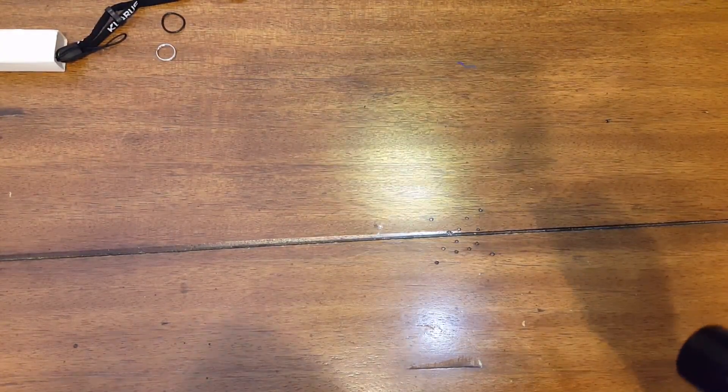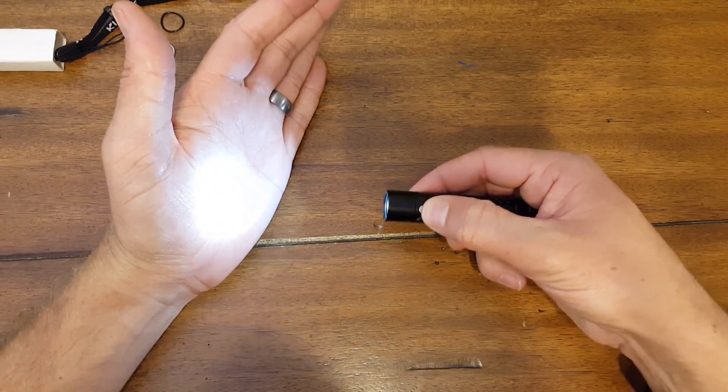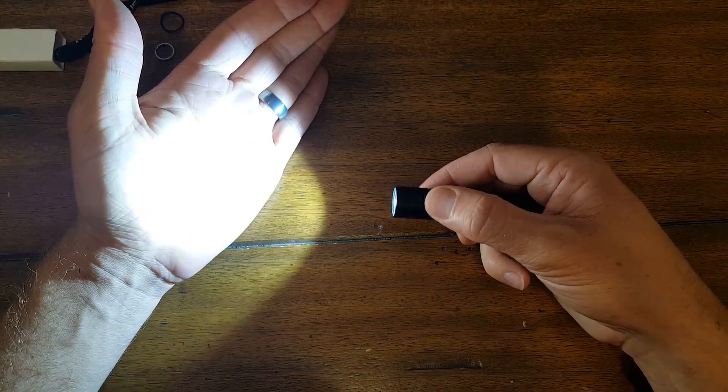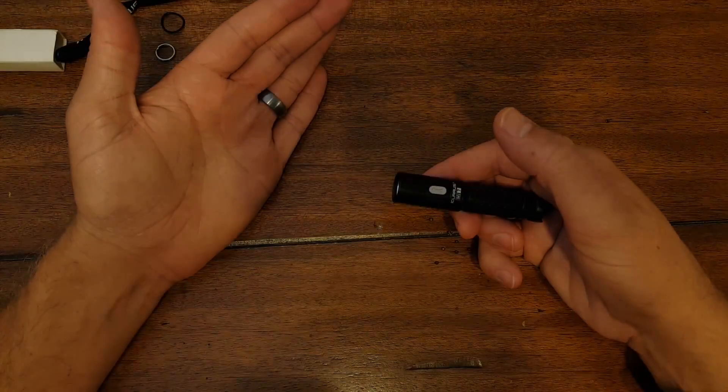It has three modes: 330, 90, and 5 lumens, which is the midnight mode. To get to the different modes, you push it once for 330 lumens, push it again for 90 lumens, and push it again to turn off. To get to midnight mode, you hold the button down for two seconds, which is nice for nighttime when you don't want a super bright light. It's going to be a nice everyday carry.